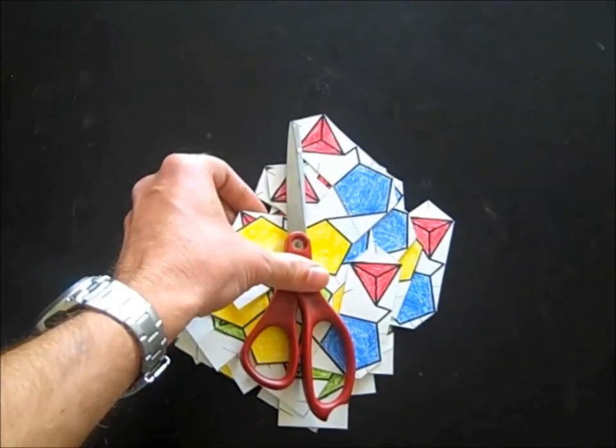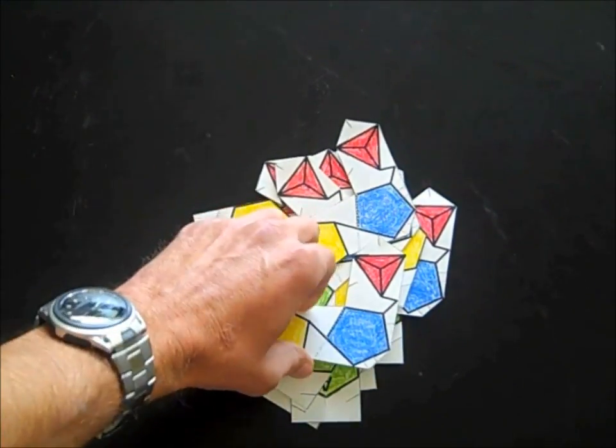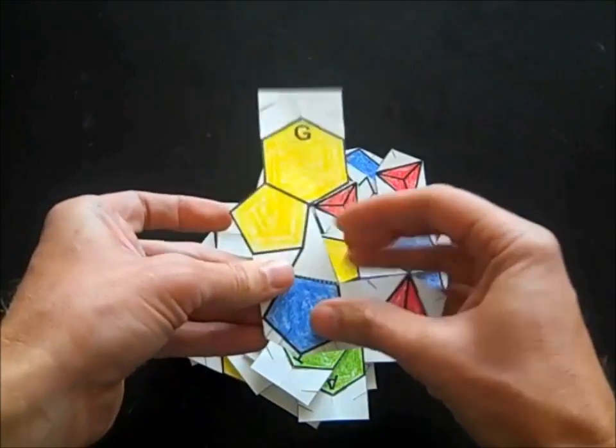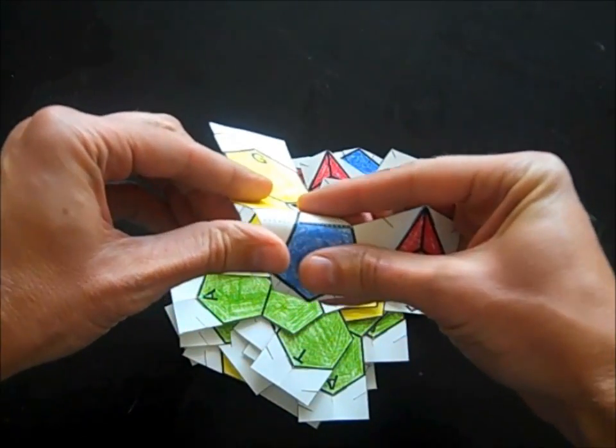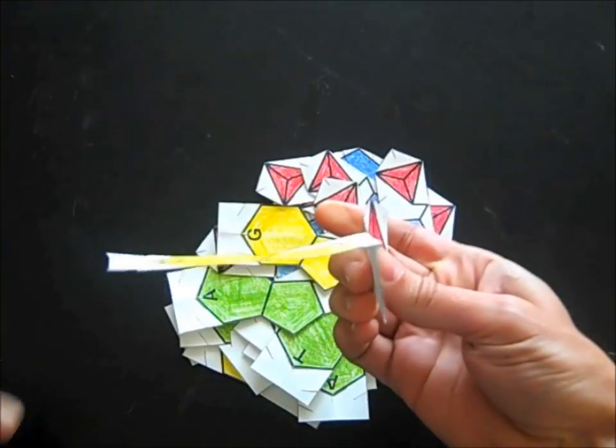Okay, now all of my cutting is done, so I don't need these anymore. The next step is to make a fold, one single fold, on each nucleotide right on that dashed line, just like that.